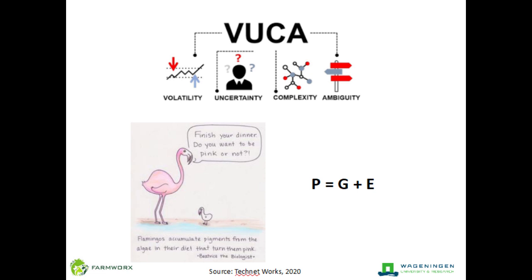VUCA stands for volatile, uncertainty, complex and ambiguous. In any scenario, not necessarily related to the pandemic, but even a classroom setting — when we take these four different aspects into context, they are always omnipresent, either in home life situations or any scenario.